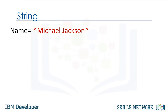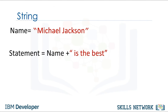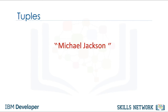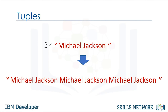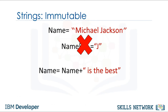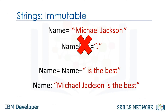We can concatenate or combine strings using the addition symbol. The result is a new string that is a combination of both. We can replicate values of a string by multiplying the string by the number of times we would like to replicate it — in this case 3. The new string consists of three copies of the original string. This means you cannot change the value of the string, but you can create a new string. For example, you can create a new string by concatenating the original variable with a new string — the result changes from Michael Jackson to Michael Jackson is the best.